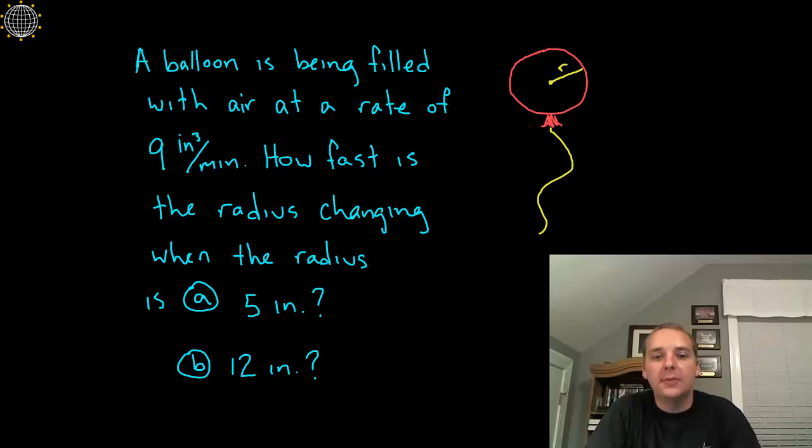So just an educated guess, probably the answer for part A will be larger, it will be a faster rate of change than the answer in part B when the radius is 12 inches versus 5 inches.